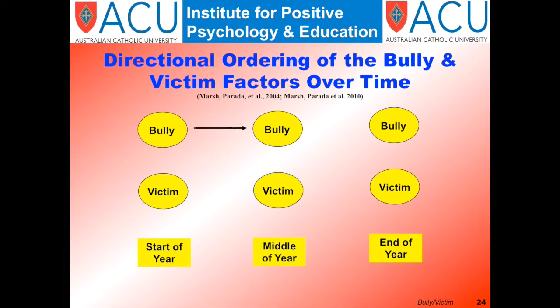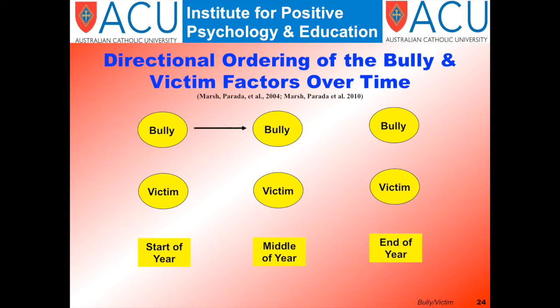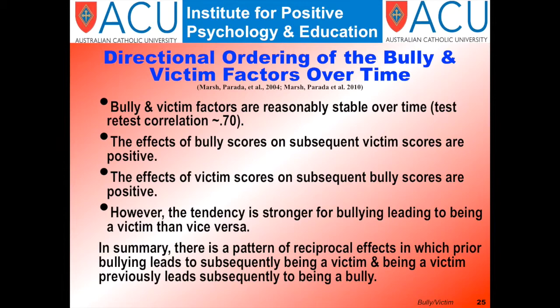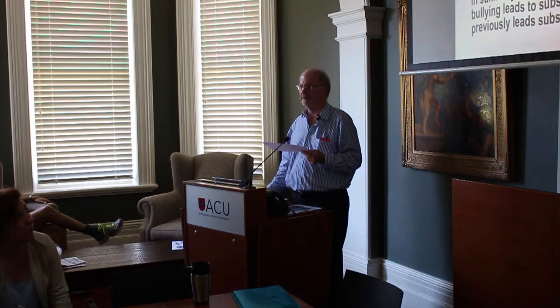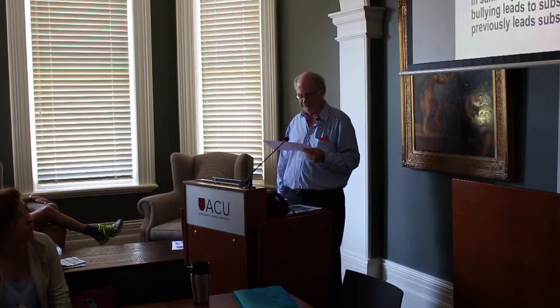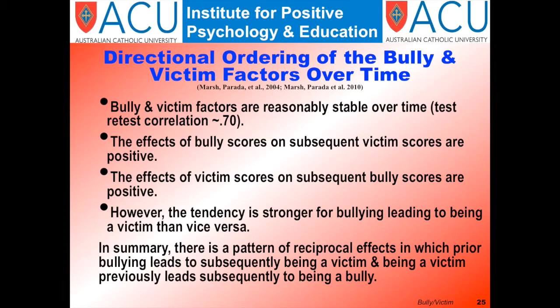Testing causal ordering hypotheses requires longitudinal models with the same constructs measured on multiple occasions. We asked: do today's bullies become victims in the future, and do victims become bullies? The bully and victim factors are reasonably stable over time, with test-retest correlations of about 0.7. However, the total effects of time-one bully scores on subsequent victim scores are positive, and vice versa — indicating a pattern of reciprocal effects. The tendency is stronger for bullying leading to victimization than vice versa.